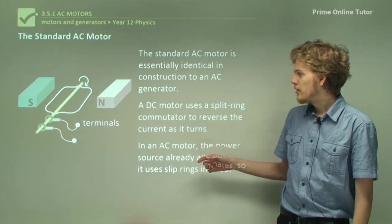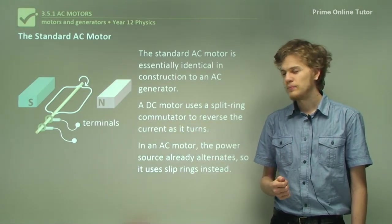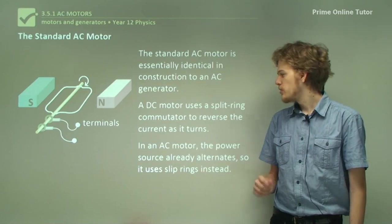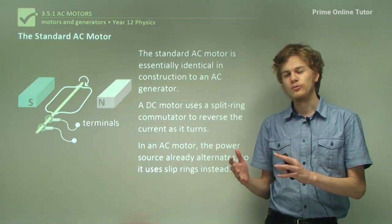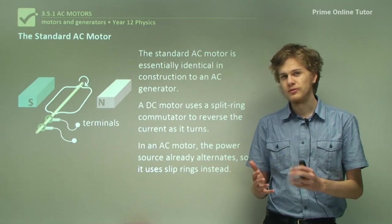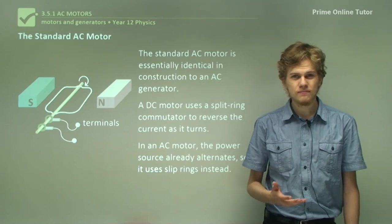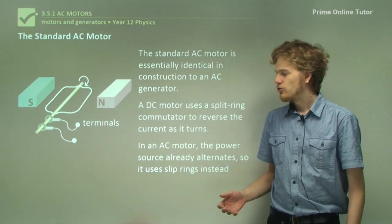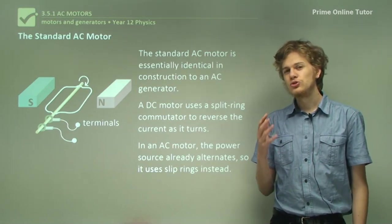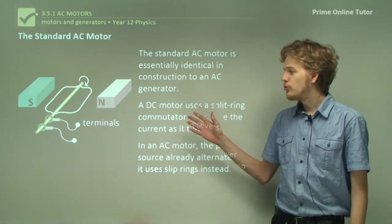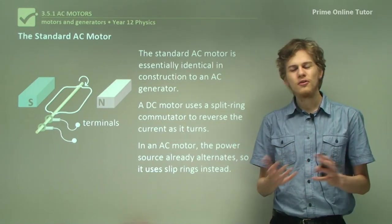You can see in the diagram that we have a pair of green circles and neither one of them has a split in it. These green circles are called slip rings. We don't need to reverse the current through the motor every half turn because the power source is already doing that for us. We already have a voltage that is smoothly alternating and that will control the rotor of the motor spinning. We don't need to worry about reversing the current every half turn.